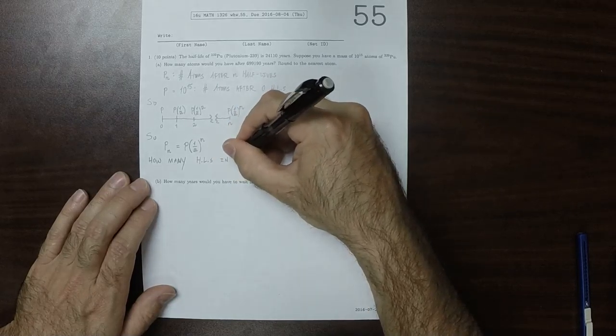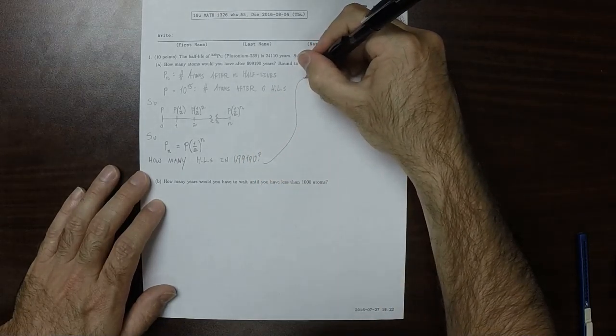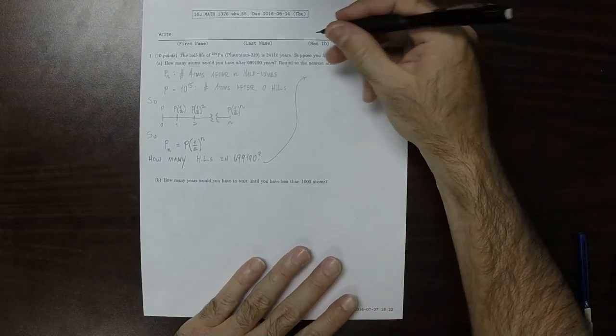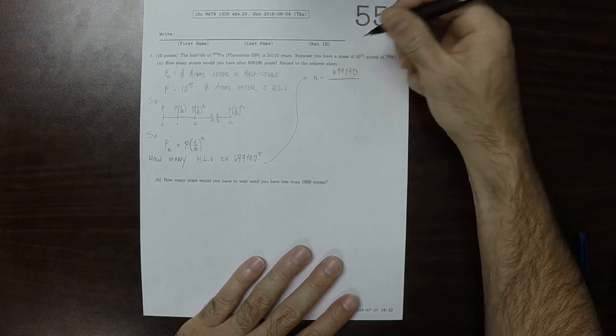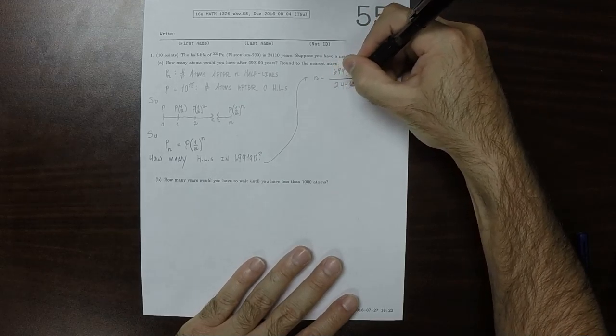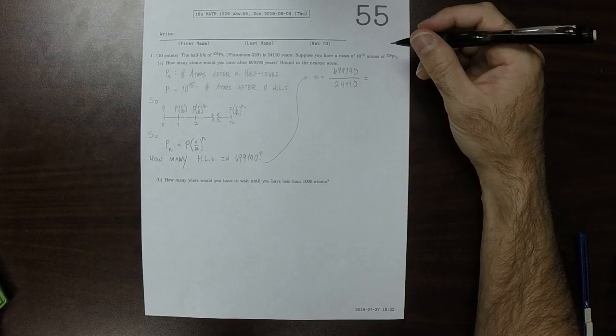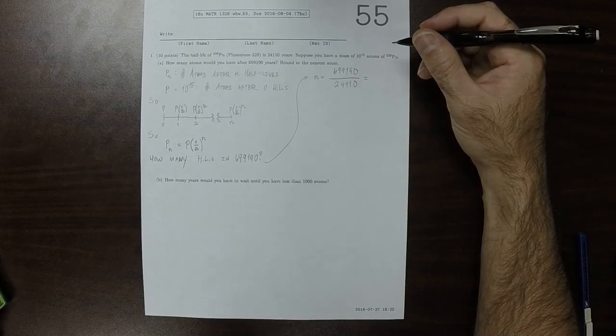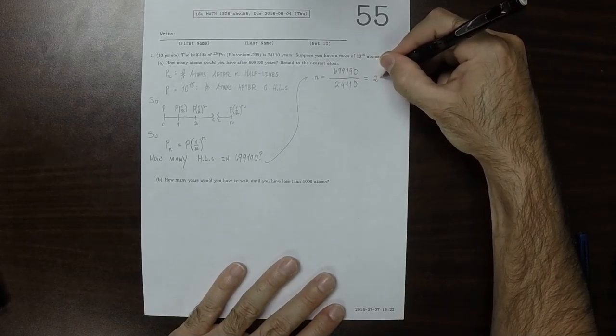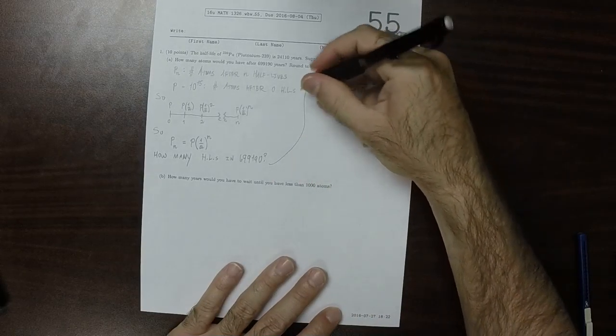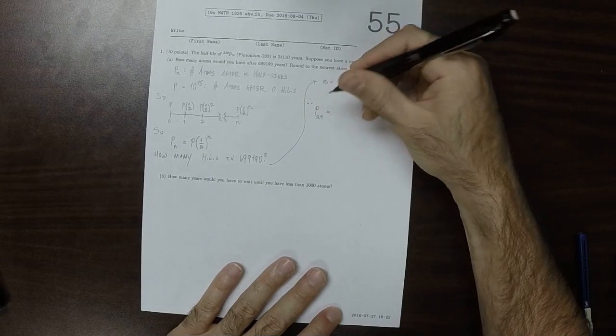How many half-lives occur in 699,190? Well, the answer is N equals 699,190 divided by 24,110, the amount of years in a half-life. And typing that in, that's 29. So there's been 29 half-lives.